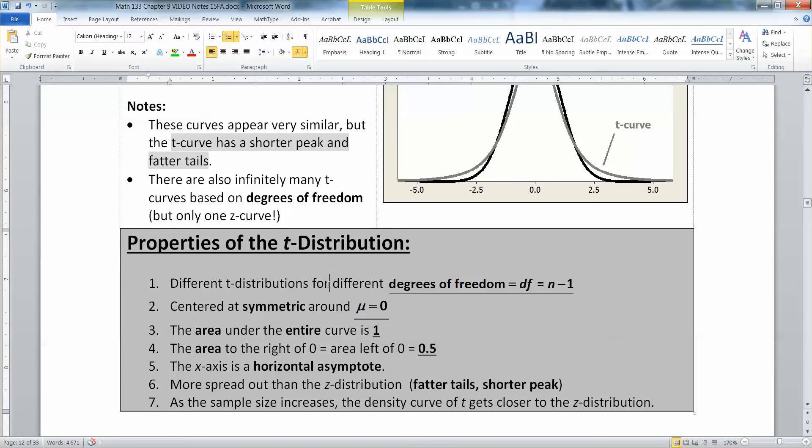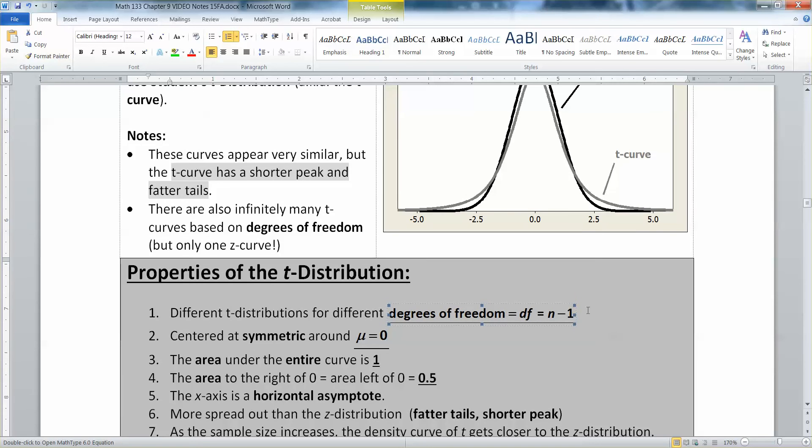Different T distributions are for different degrees of freedom. Your degrees of freedom for now is n minus one. It's the sample size, which is n, take away one. That's because the first n minus one things are free to be whatever they want, but the last one has to be whatever it takes to make that curve.